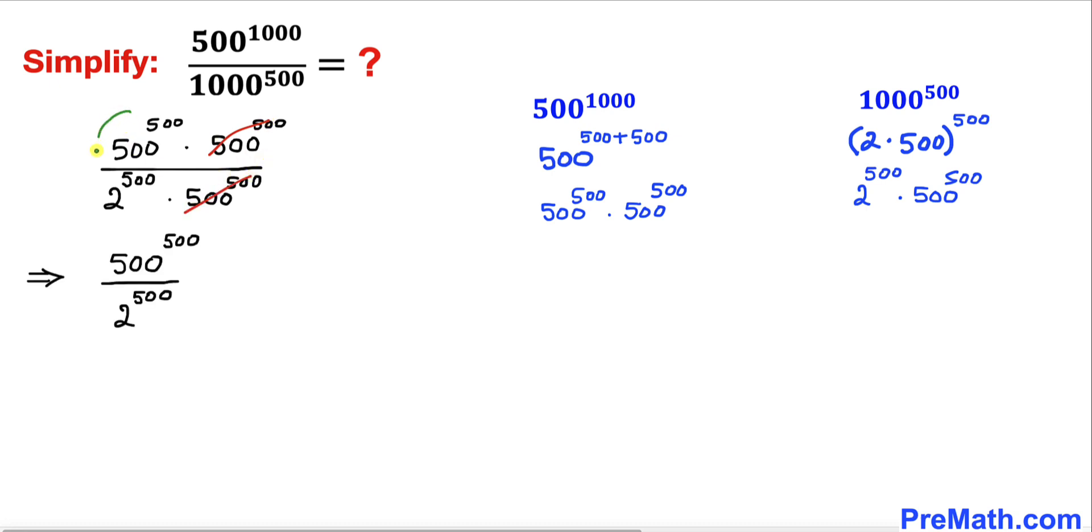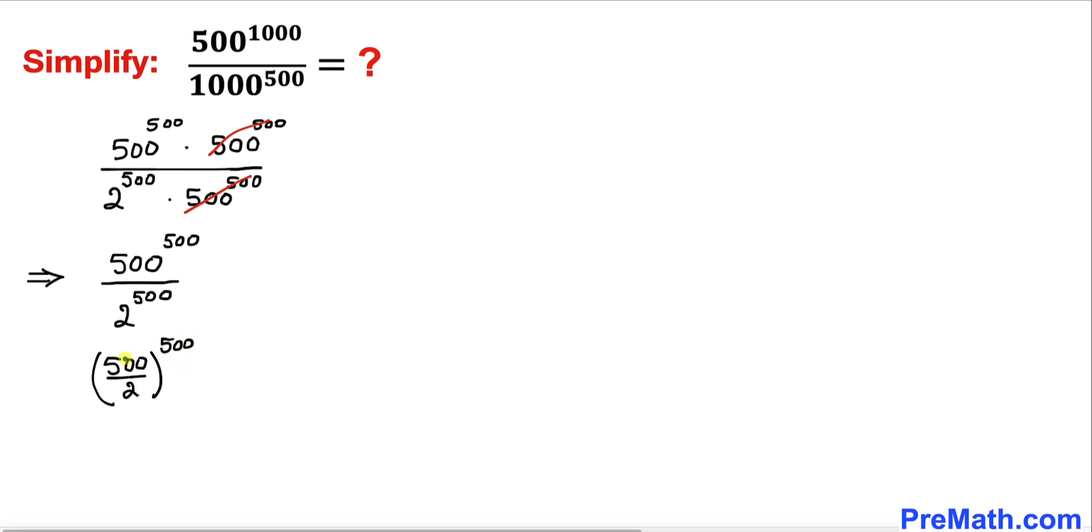So therefore we are just left with this fraction as you can see over here. Now let's focus on this fraction. Since the exponents are the same, we can write this one as 500 divided by 2, whole to the power 500. And now we can see inside this parentheses, 500 divided by 2 is the same as 250.